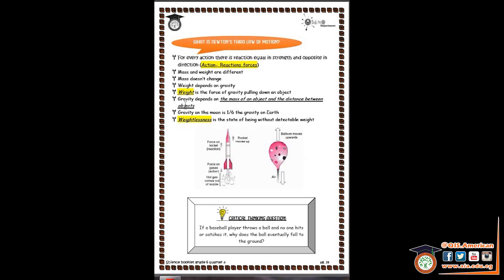When the mass is big, the gravity will be big. When the distance between objects is big, so the gravity will be small. For example, the gravity on the moon is 1 over 6 the gravity on Earth. All of you know that.